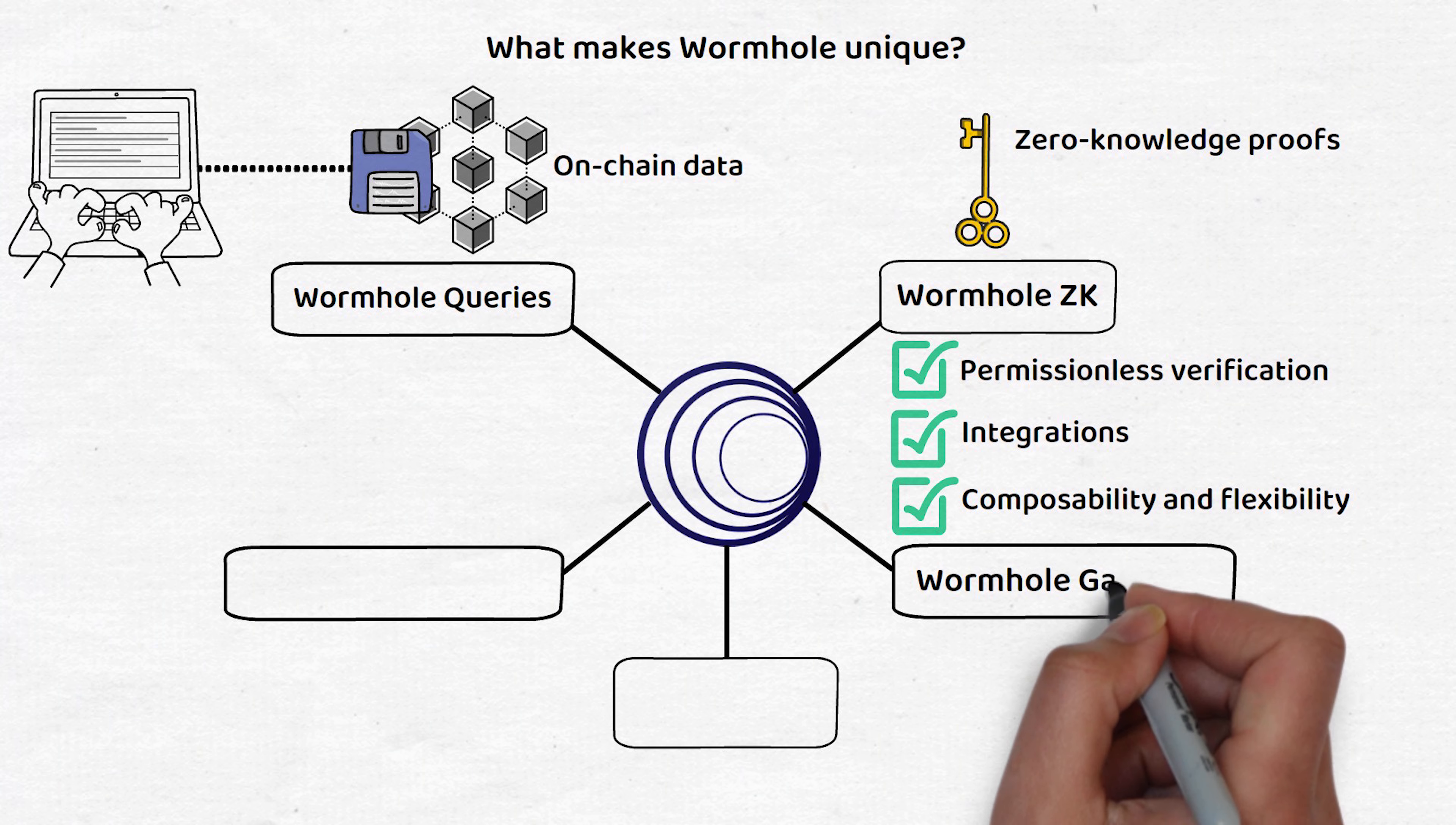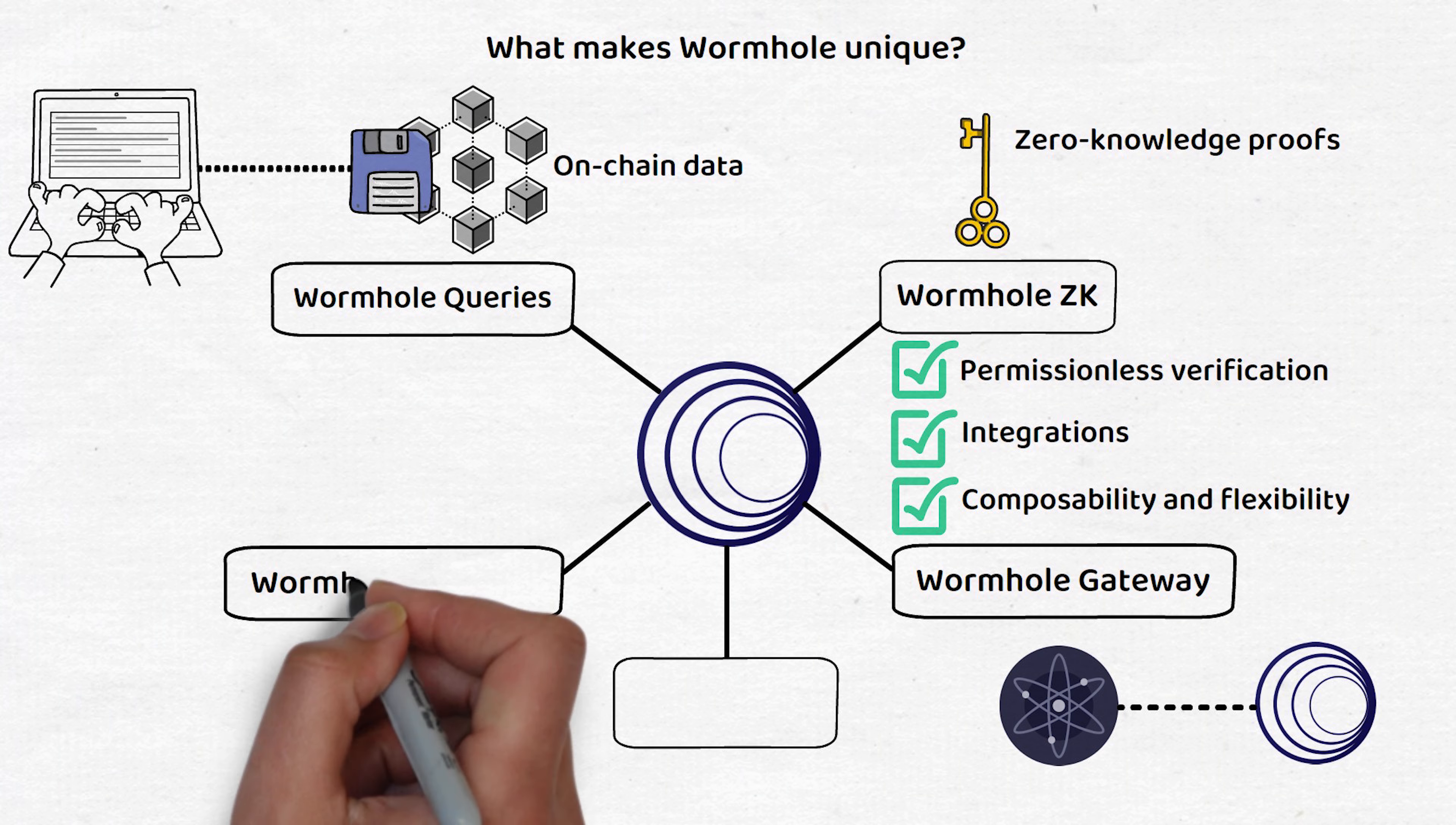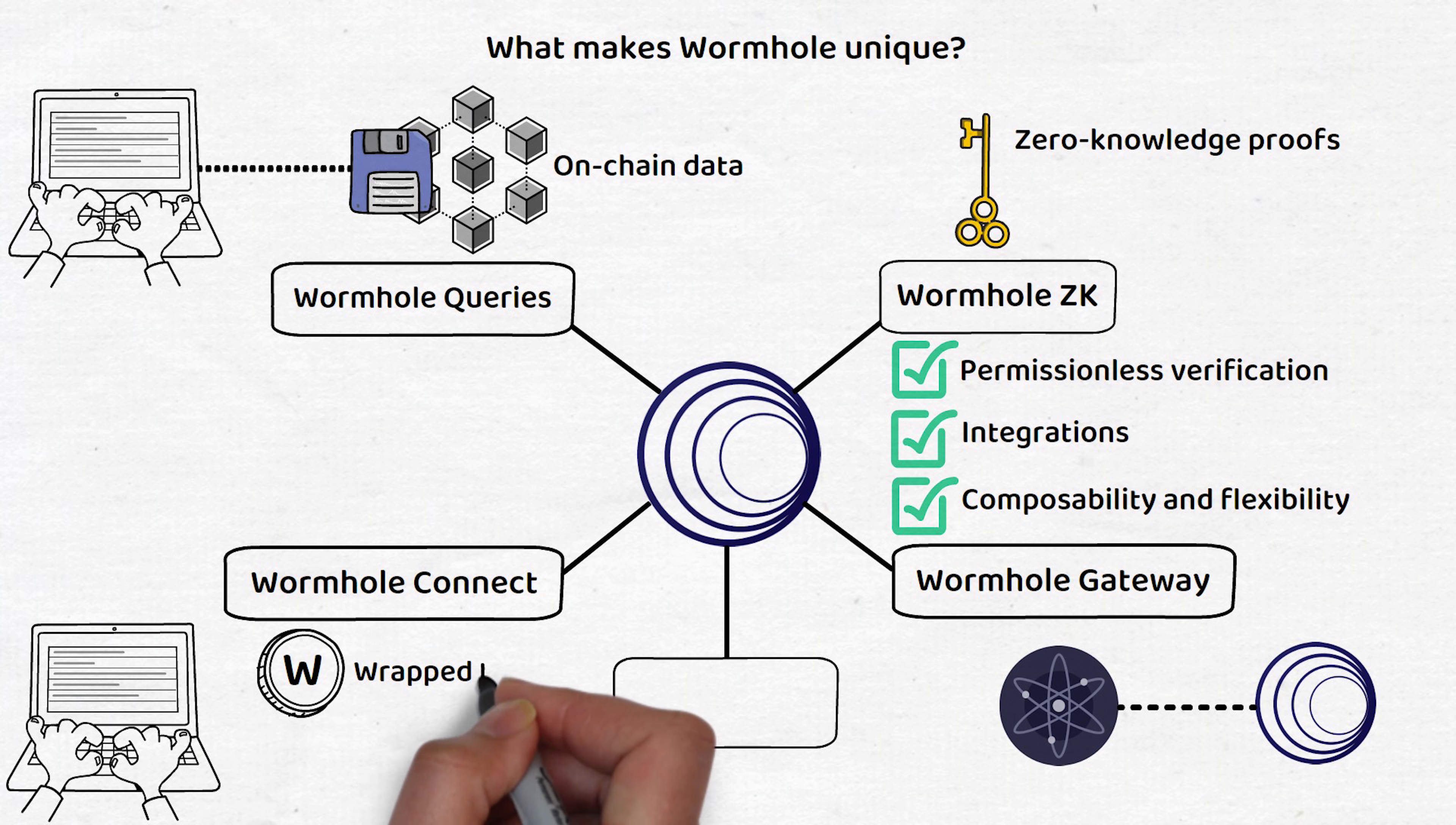Next, Wormhole Gateway is a Cosmos-based app chain designed to bring the benefits of Wormhole's liquidity to Cosmos. Then there is Wormhole Connect, which enables developers to easily integrate the bridging of wrapped or native tokens directly into their applications in a few clicks.